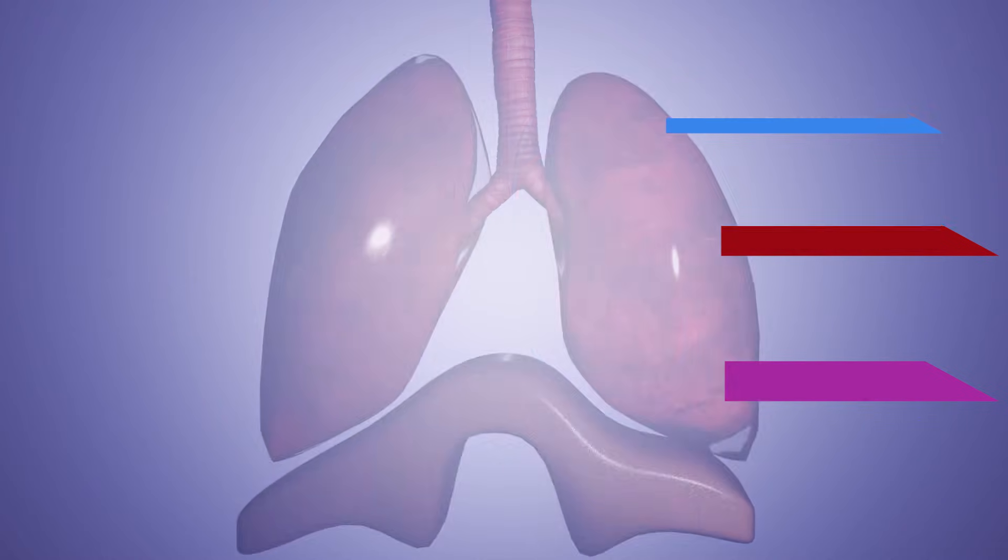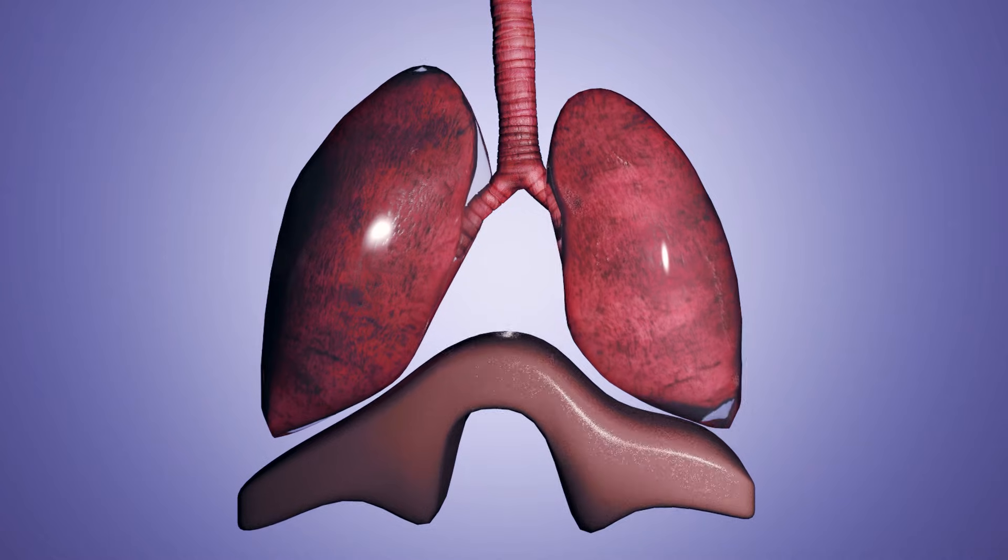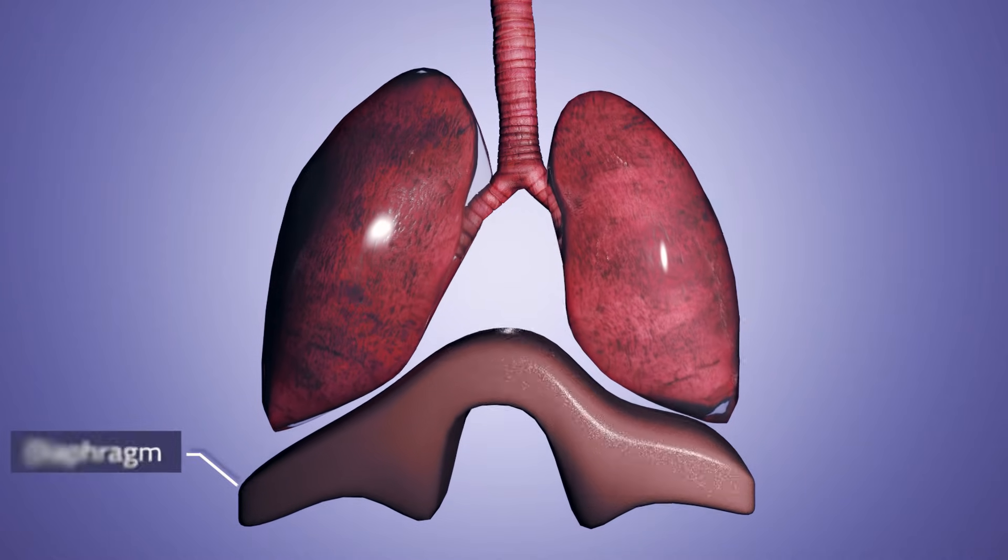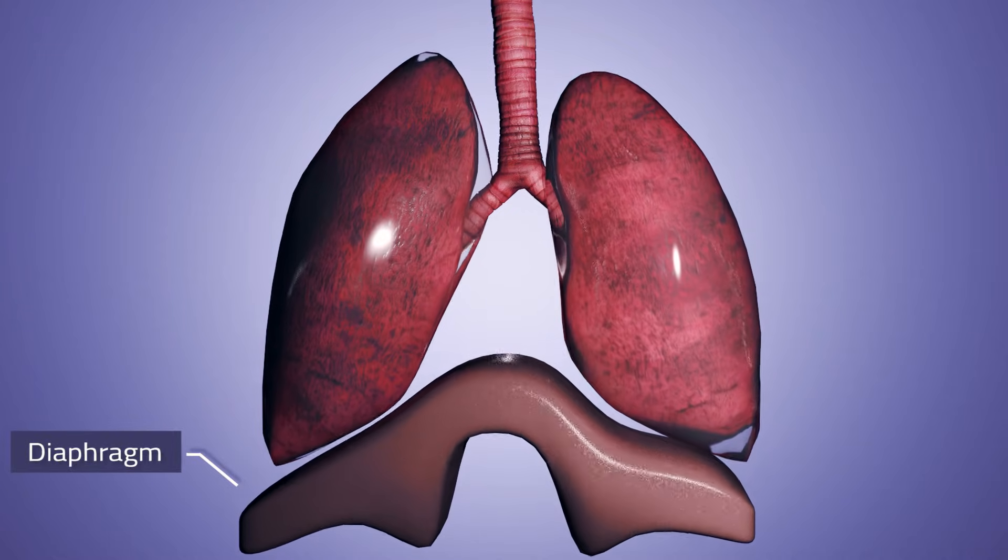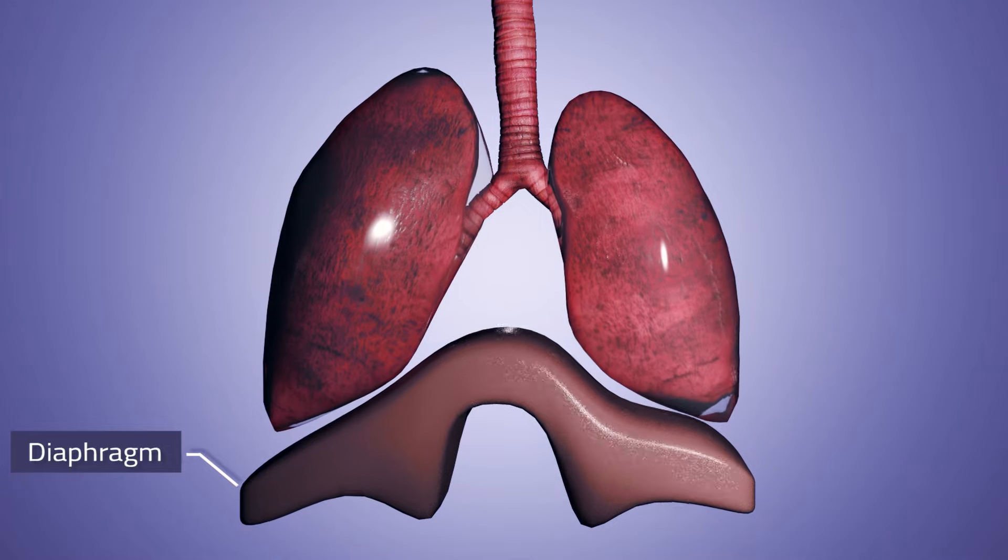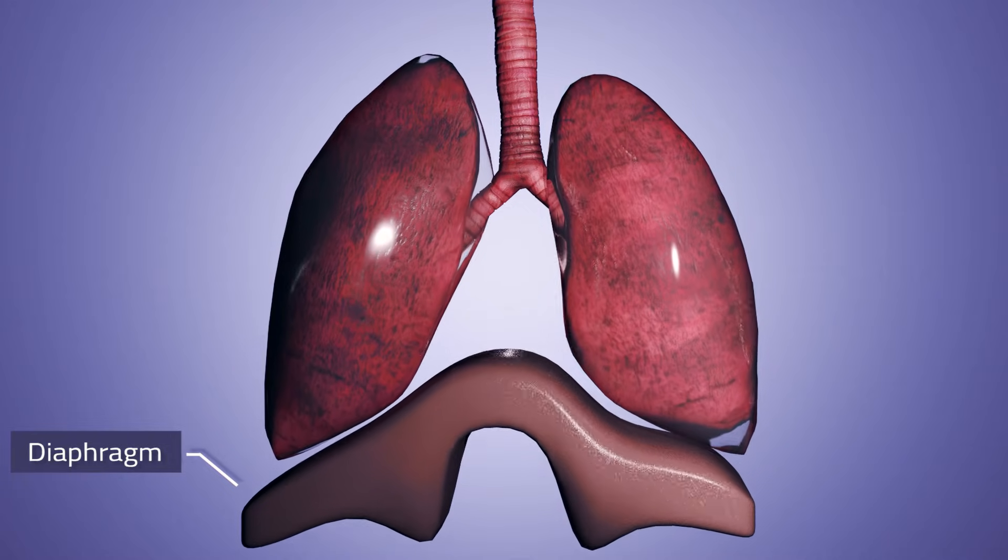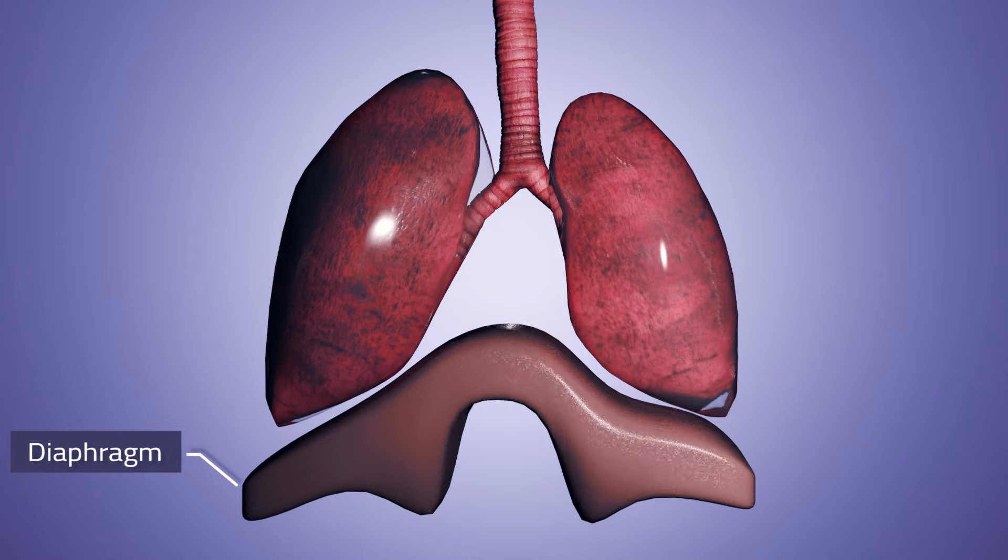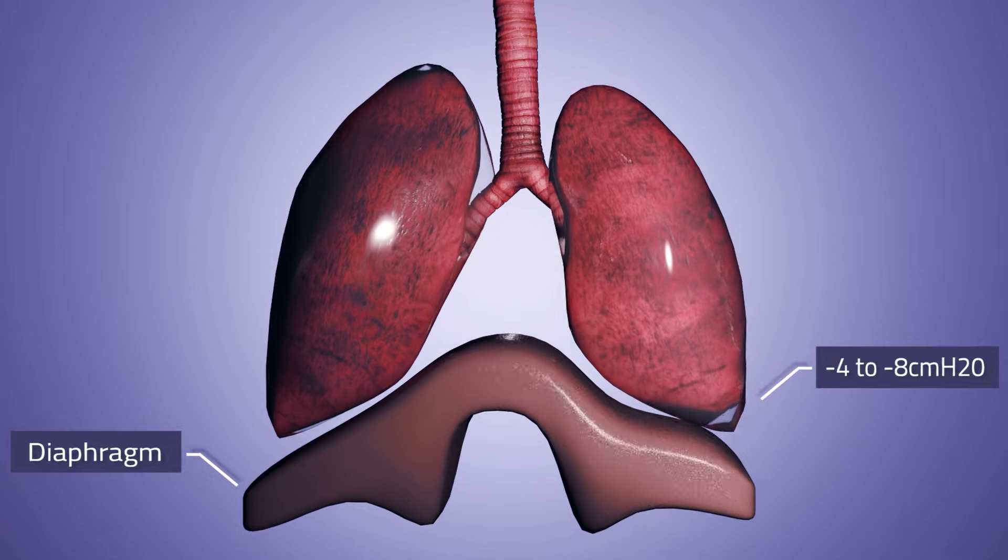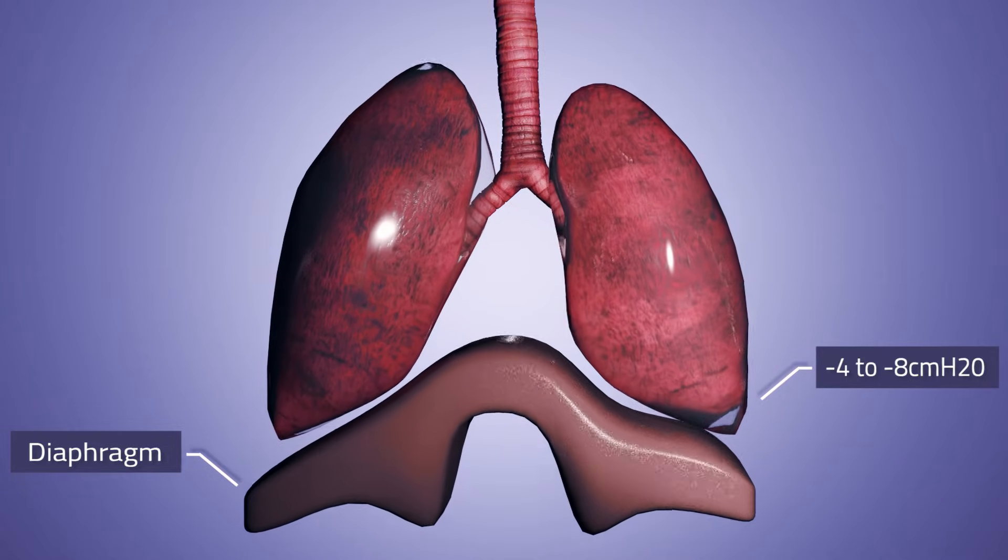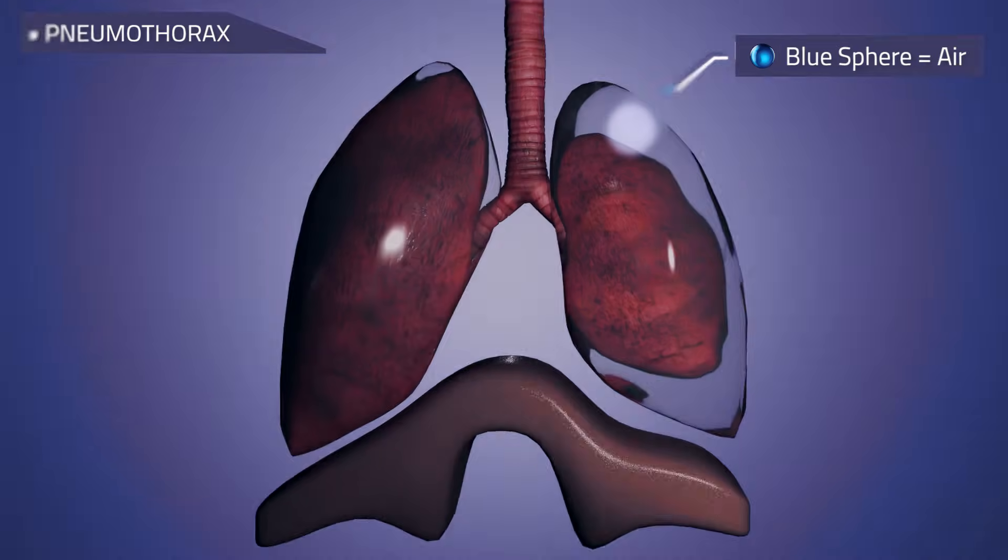The pleural space forms a closed system and this layer of liquid transmits the diaphragm movements to the lung, causing it to expand and contract. As the lung tissue is elastic, it tries to resist these movements and generates a negative pressure within the pleural space that varies between minus 4 to minus 8 cm H2O. When a pneumothorax happens, the pleural space is invaded by air, losing the negative pressure.